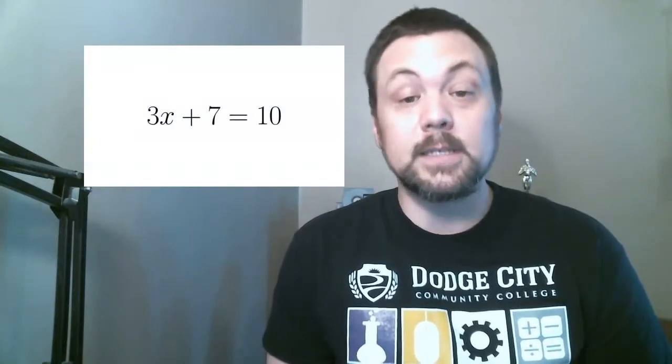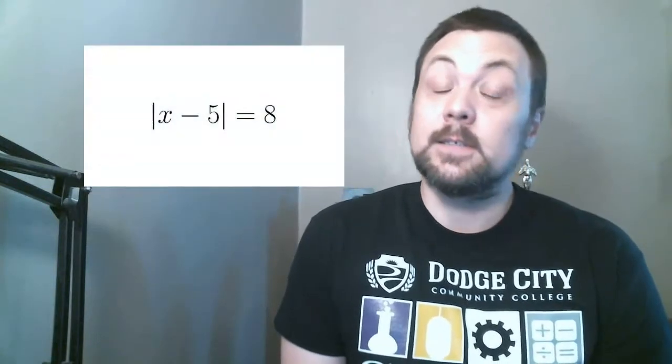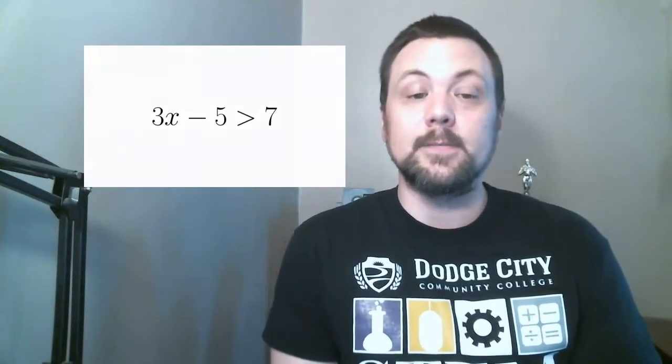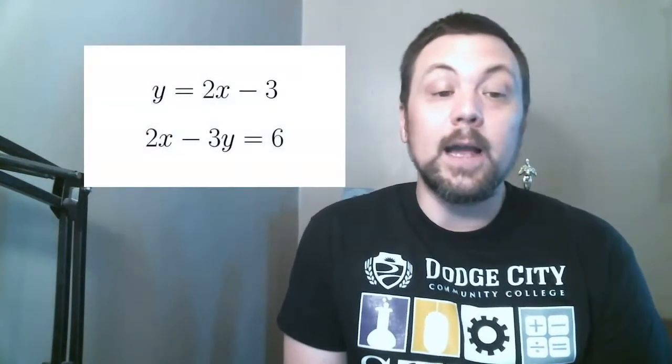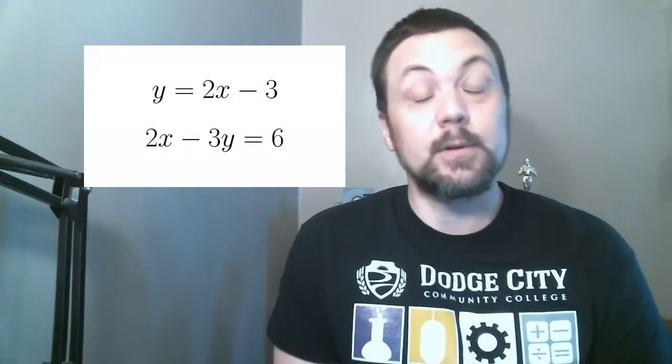In intermediate algebra, a student will learn the following topics to help prepare them for success in college algebra: solving linear equations of one variable, such as 3x + 7 = 10; applications of equations to a given situation, otherwise known as word problems; absolute value equations, such as |x - 5| = 8; linear, compound, and absolute value inequalities, such as 3x - 5 > 7; the real number line and interval notation; and graphing linear equations of two variables using either the slope or the x- and y-intercepts, for problems such as y = 2x - 3 or 2x - 3y = 6.